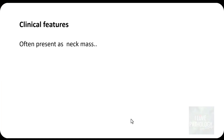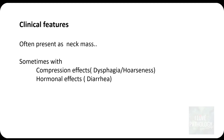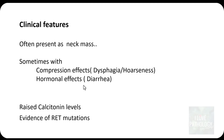Patients often present with a neck mass, usually in the upper two-thirds of the lateral lobes of the thyroid. Sometimes the patient presents with compression effects such as dysphagia or hoarseness of voice, or hormonal effects. Because it secretes vasoactive amines, patients may also present with diarrhea. Raised serum calcitonin levels will invariably be present, and you can confirm the diagnosis by identifying RET mutations by molecular diagnosis.